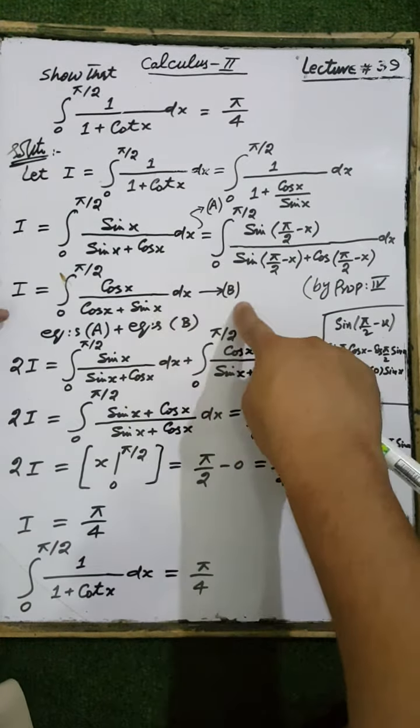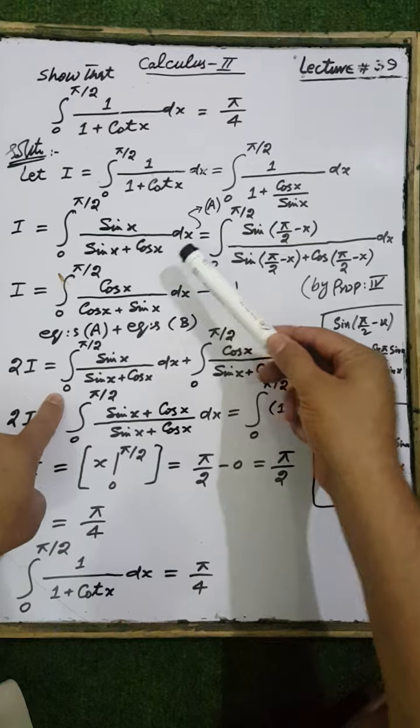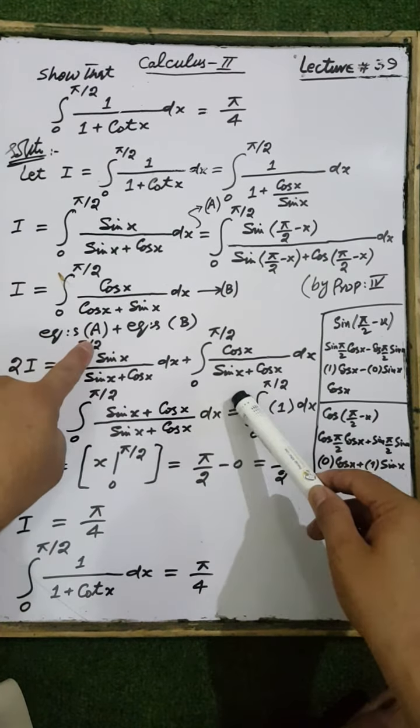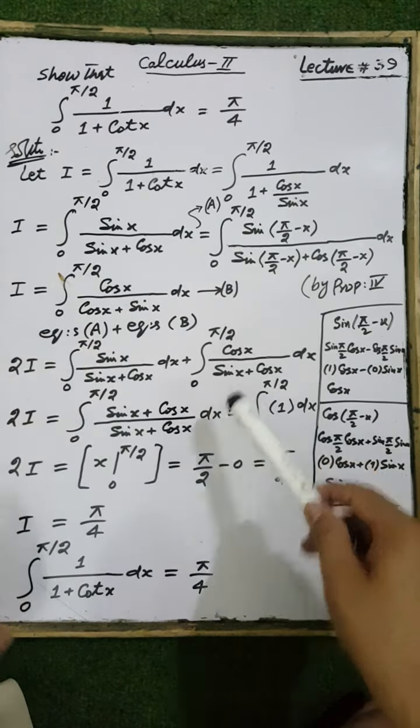Adding equation one and equation two, we have 2I equal to the integral from 0 to π/2 of sin(x)/(sin(x) + cos(x)) dx plus the integral from 0 to π/2 of cos(x)/(sin(x) + cos(x)) dx. Since the limits of integration are the same, this equals the integral from 0 to π/2 of (sin(x) + cos(x)) divided by (sin(x) + cos(x)) dx. Cancelling, the result is 1.